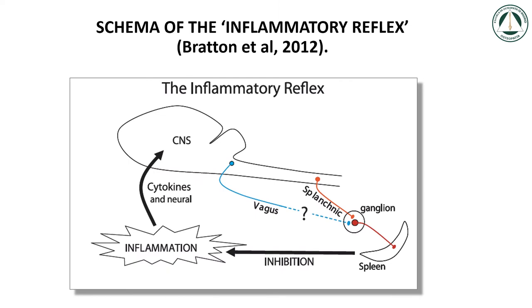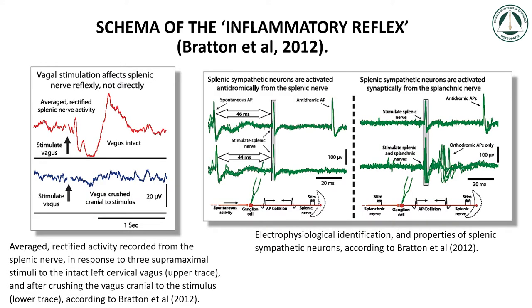This picture is a schema of the inflammatory reflex according to Bratton et al. 2012. The hypothesized pathway from the efferent vagus to splenic post-ganglionic sympathetic neurons is marked with a question mark. The diagrams on the left represent the averaged, rectified activity recorded from the splenic nerve, in response to three supramaximal stimuli to the intact left cervical vagus (upper trace), and after crushing the vagus cranial to the stimulus (lower trace), according to Bratton et al. 2012.